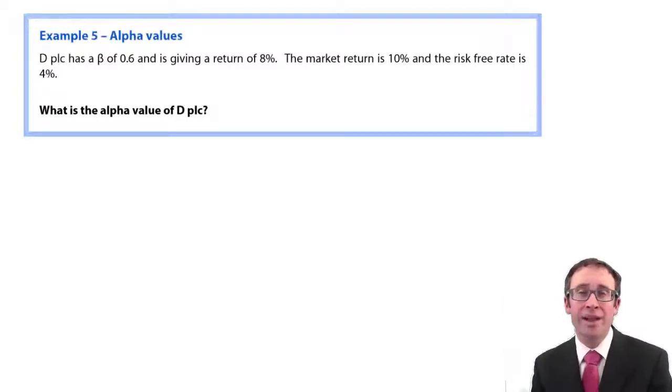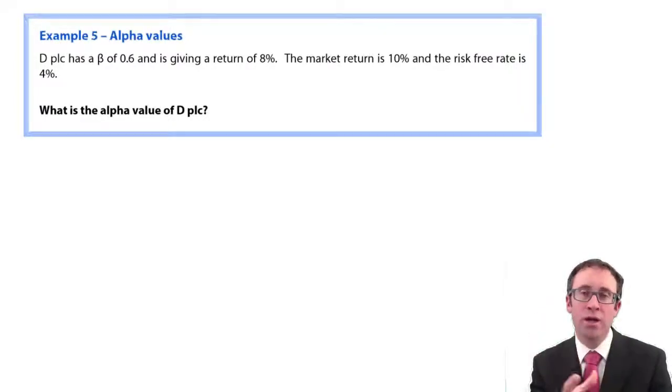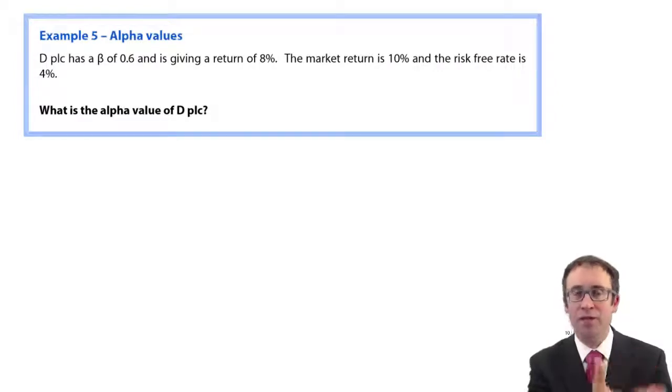And it's all our alpha values. Alpha values are looking effectively at the actual return an investment is giving you based upon capital growth, based upon the dividend that you're receiving as well, and then comparing that to what you think you should get theoretically. So the simple difference between the actual return and the theoretical return is the alpha value.